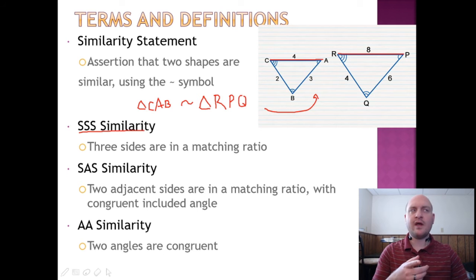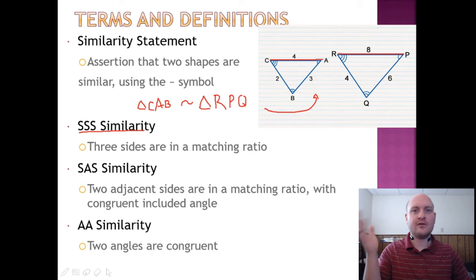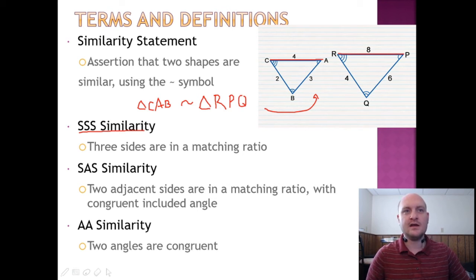Now, if you're wondering, wait, why isn't it AAA similarity? Wouldn't we need the third angle? It's a triangle, after all. And it's excessive. You don't need the third angle, because by the third angle theorem, two angles is enough. You can figure out what the third angle is by subtracting from 180. So if you have the first two angles, you only need AA similarity.